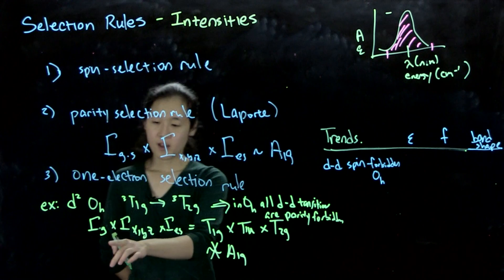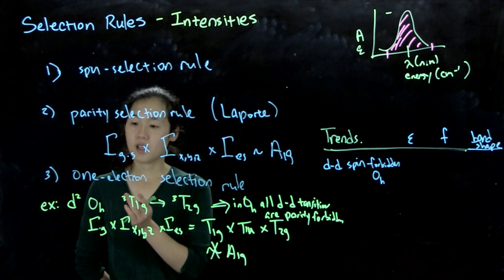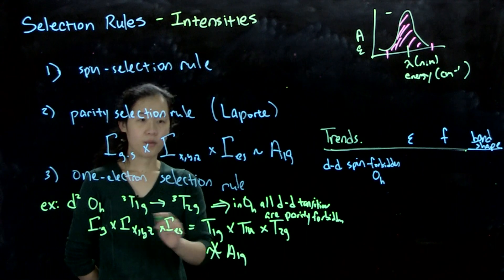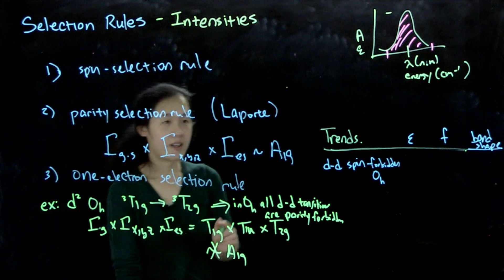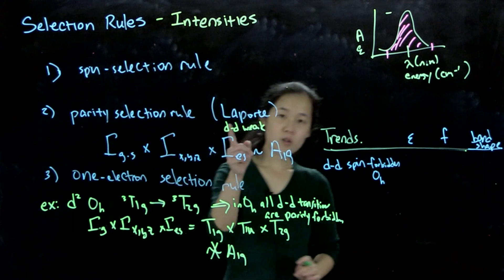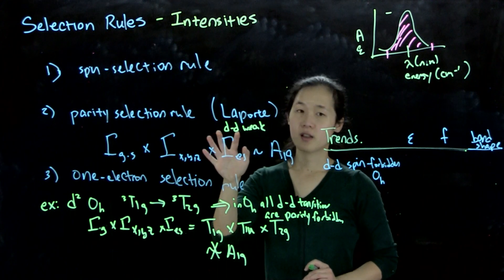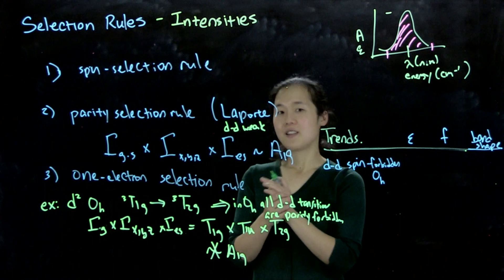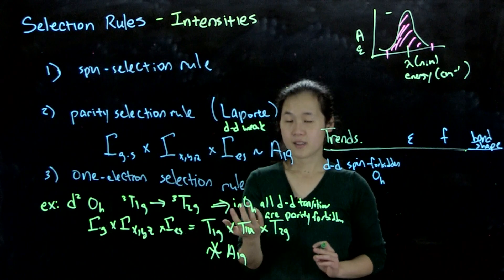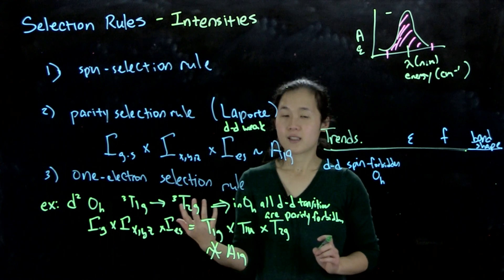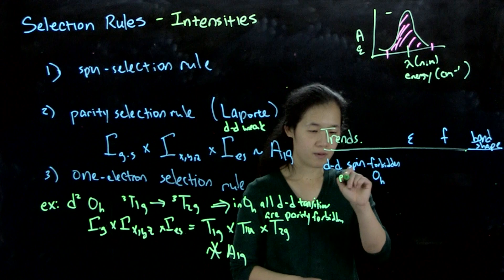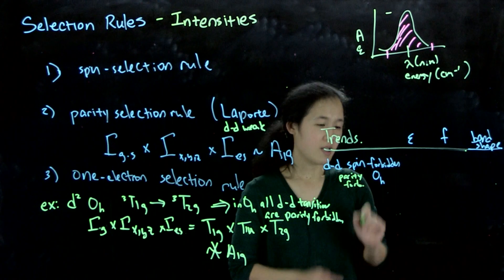In tetrahedral symmetry, where we no longer have an inversion center, we don't have to worry about g or u labels. So in tetrahedral we can have parity-allowed transitions. Another factor of the Laporte selection rule: d-d transitions are always weak because d orbitals are always g in symmetry, so going d-to-d is still forbidden. You can go from a d orbital to a p orbital — that's allowed and very intense. But d-to-d, p-to-p, or s-to-s are not allowed.